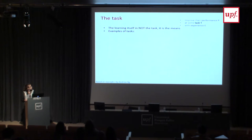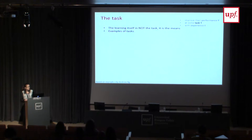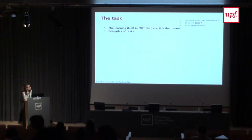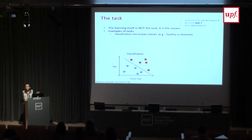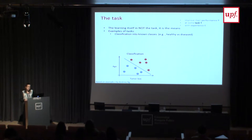About the task: it's important to understand that the learning is not the task itself — we are not going to program the computer to do the task, but to learn to do the task. One of the most typical tasks is classification, where we have a fixed number of categories and the program assigns each input to one of them. For example, tumors can be benign (blue) or malignant (red), distinguished by size and patient age.